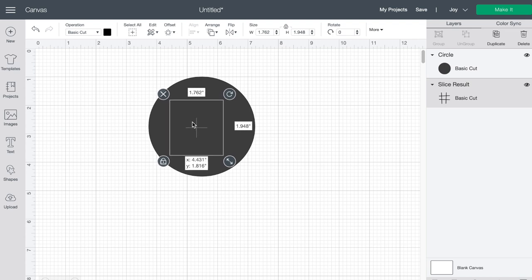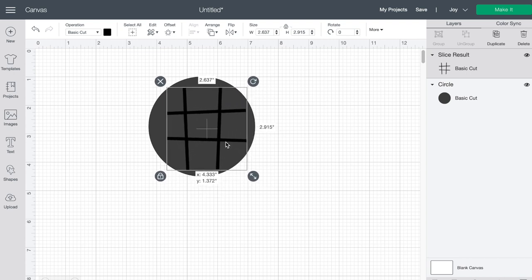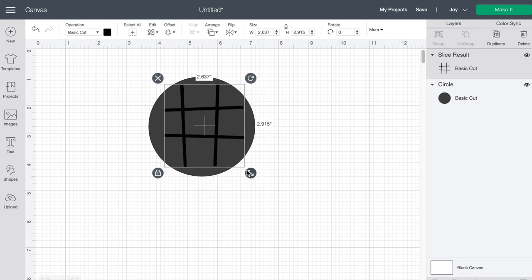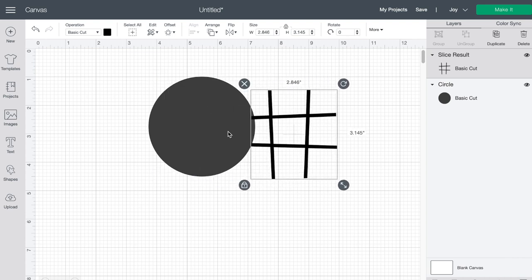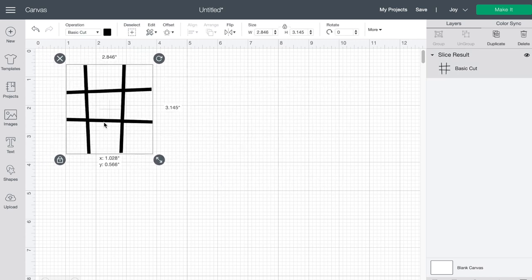Then I can go ahead and drag my grid right over, and you might need to arrange it so it's in the front so you can see it. And then go ahead and take that arrow and just resize it to fit the coaster as closely as possible as you can. And once you're happy with it, you can go ahead and move that away and delete the circle and now we've got our grid that we can cut out.